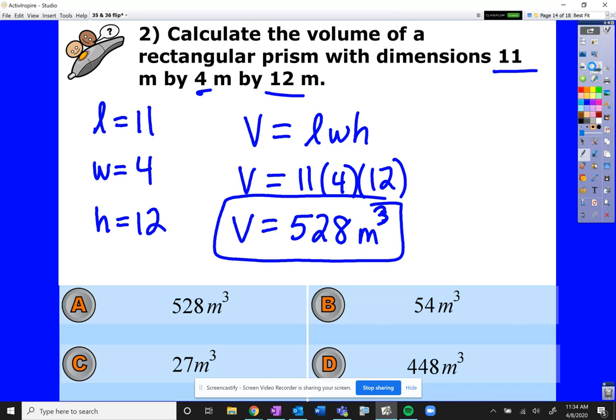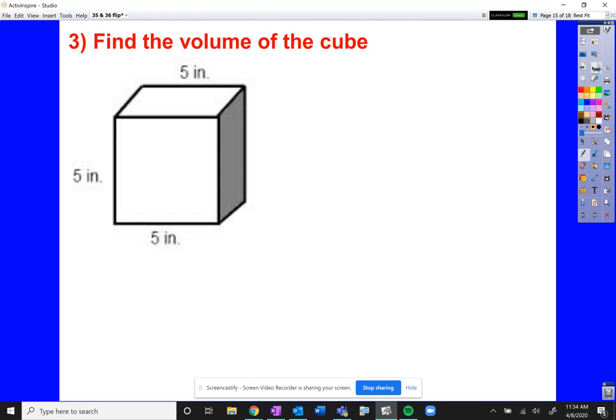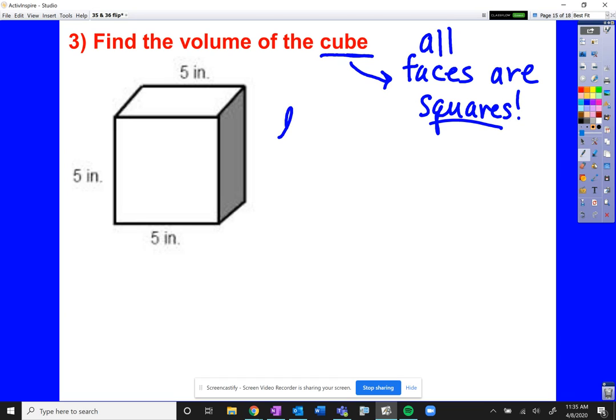Choose your length, choose your width, choose your height, multiply them up. It's really that simple. Okay, find the volume of the cube. Interesting. Volume of the cube. So what's unique about a cube? That's very interesting. We're going to use some words that we used last objective. Ready? The faces of a cube. All faces are squares. That's what's unique about a cube.